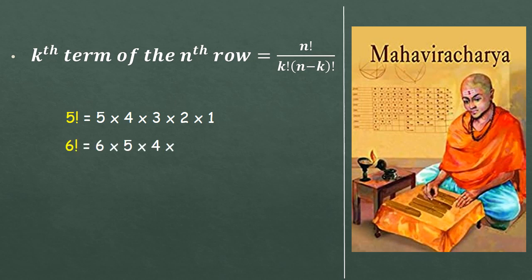Similarly, factorial 6, 6 into 5 into 4 into 3 into 2 into 1. Alright, so you got it? It's that simple. So let's remove it now. Now coming back.